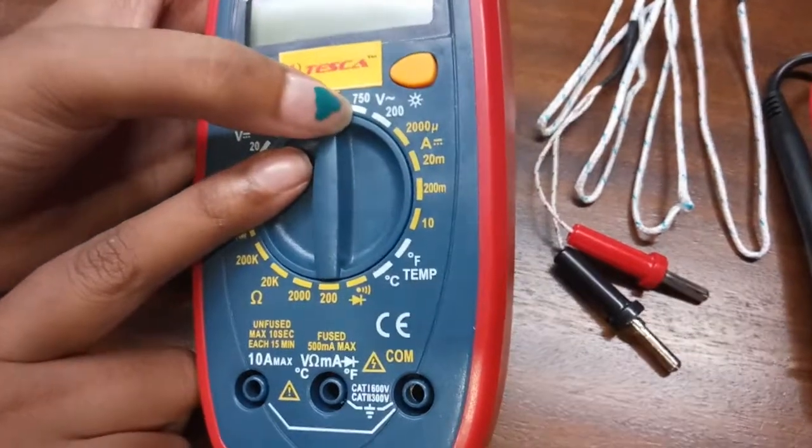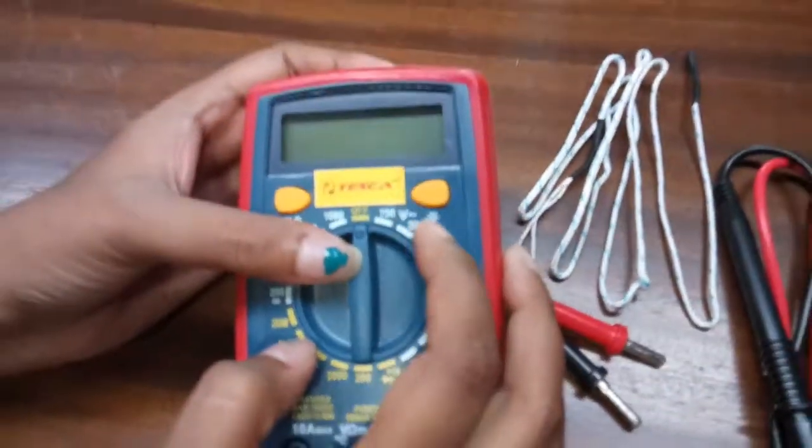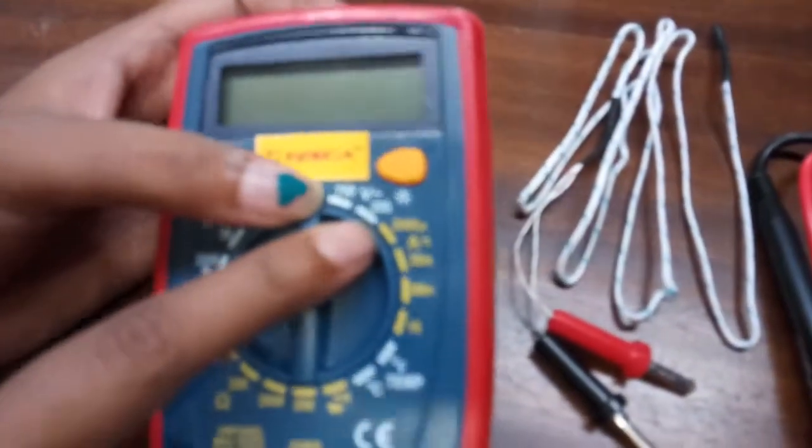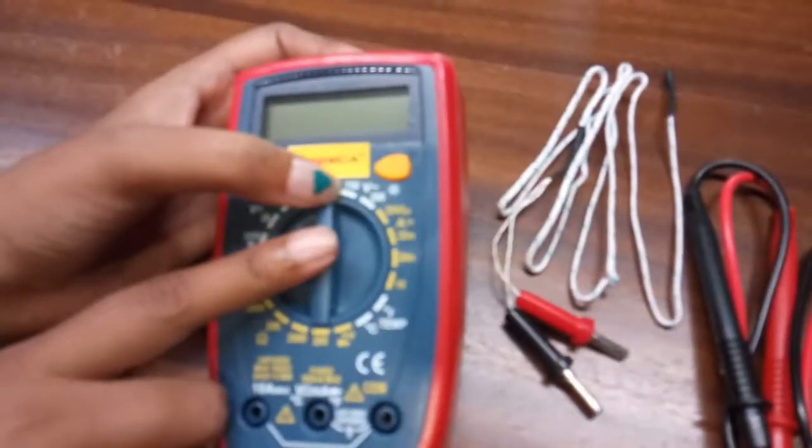After that, here this is the AC voltage with a signal sign of alternating current. The range is 0 to 200 volt AC and 0 to 750 volt AC.